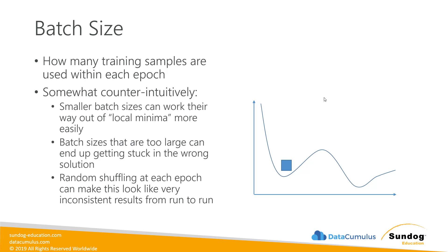Hammer this into your heads because it's counterintuitive. You'd think a large batch size is better — more data, right? But no. A small batch size has a better ability to work its way out of local minima. In this example, there's a dip in the graph with a low loss value that looks good, but the better solution may be elsewhere. Gradient descent can get stuck in that local minima. Smaller batch sizes can wiggle out of local minima more effectively, while large batch sizes can end up stuck there — basically weighing the process down.